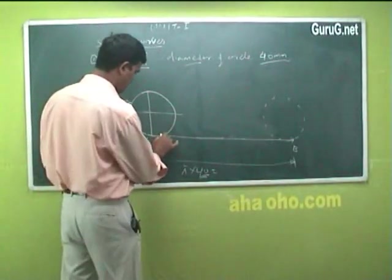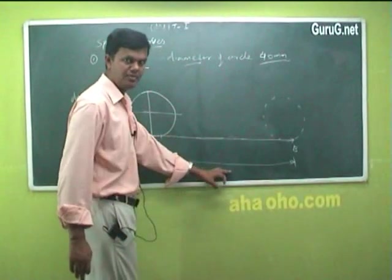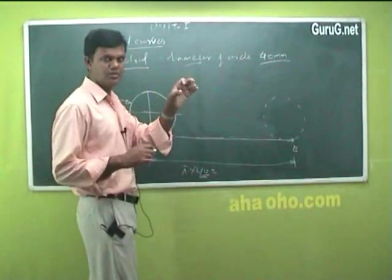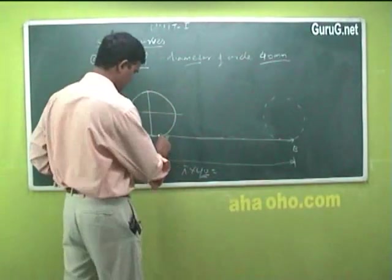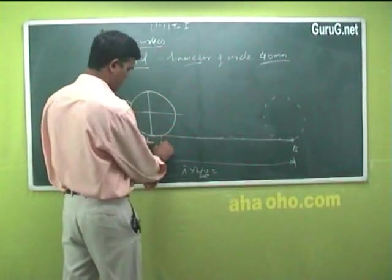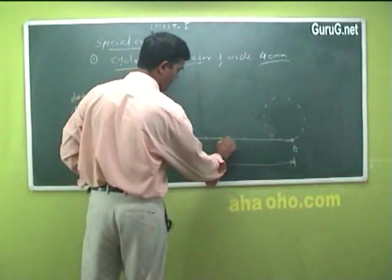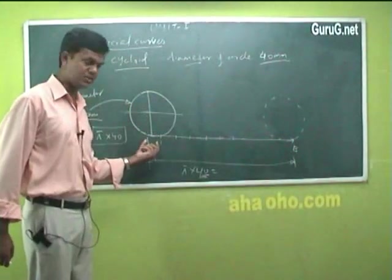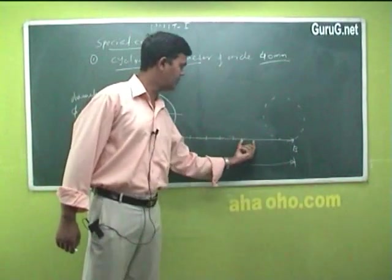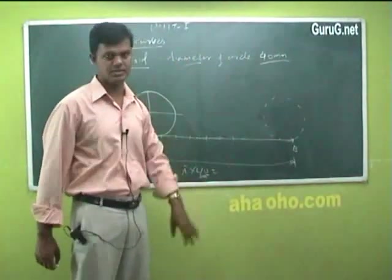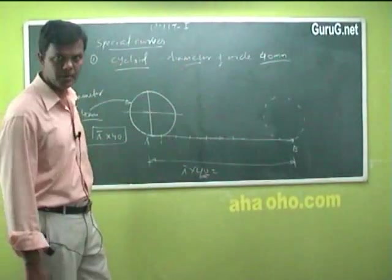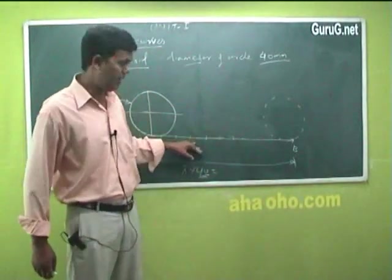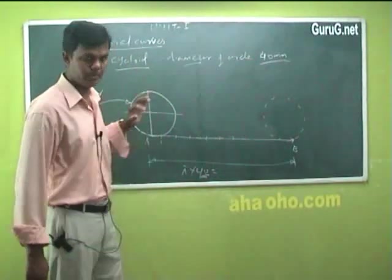If you make the base line into 12 divisions, also divide this circle into 12 equal parts. On the circle, mark points: 1, 2, 3, 4, 5, 6 going up to the top, then 7, 8, 9, 10, 11, 12 continuing around. So the circle has 12 equal parts marked on it, matching the 12 divisions on the base line.